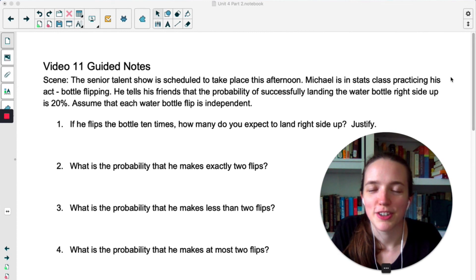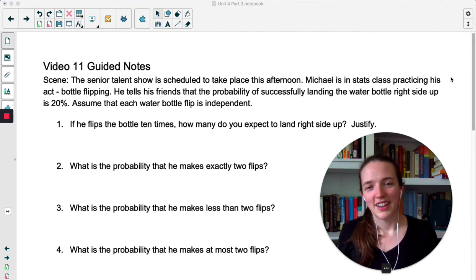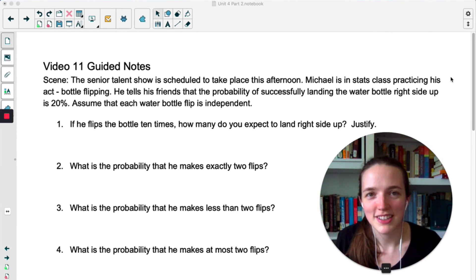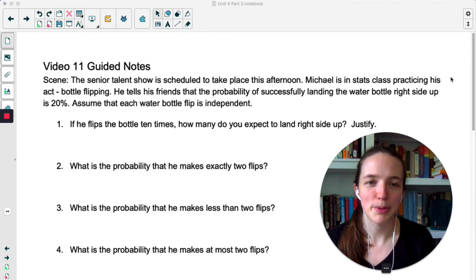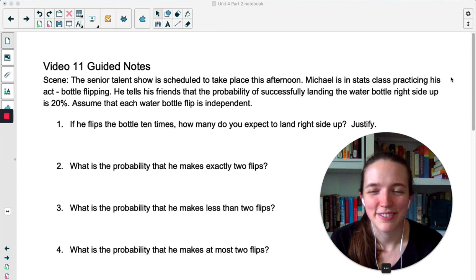As funny as it is to imagine a student doing bottle flipping as a talent at a talent show, you know that's happened. So the senior talent show is taking place this afternoon. Michael is in stats class practicing his act, which is bottle flipping. He tells his friends that the probability of successfully landing the water bottle right side up is 20%. I feel like he shouldn't be doing this as his talent if that's how good he is at it, but maybe he's charismatic or something. We'll assume that each flip is independent.